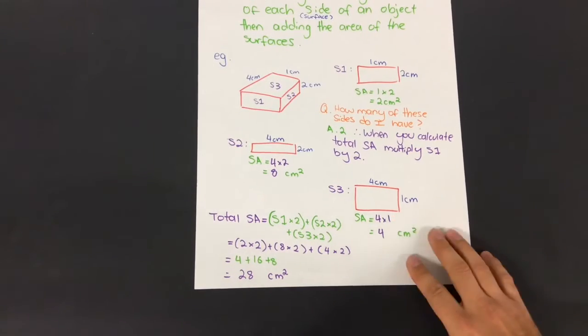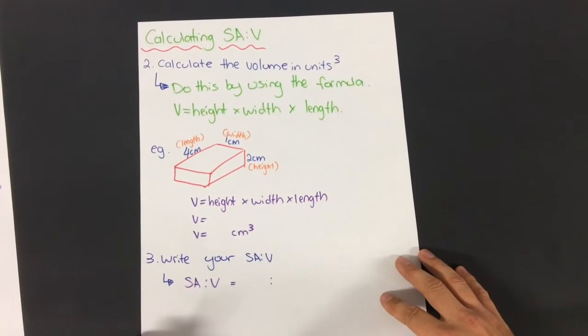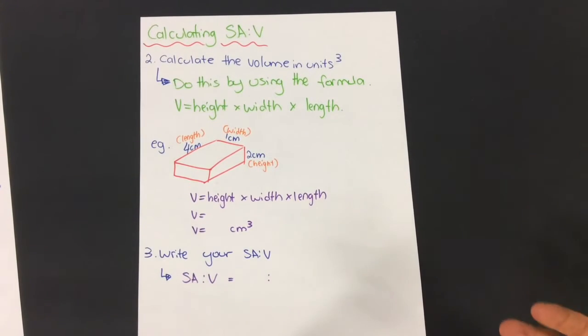My next step now is to calculate the volume. The volume is a bit of a simpler one. You calculate that by using this formula here: height by width by length. So the volume is always measured in units cubed.